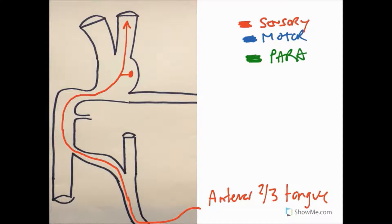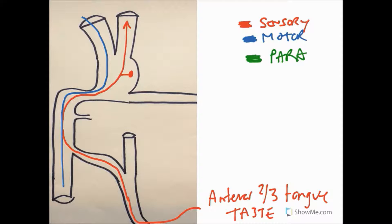Remember that general sensation from the anterior two-thirds of the tongue is trigeminal — here we are dealing with taste, a special sensation. Next, we have our motor branches coming in the other direction through the motor root. They travel down through a foramen called the stylomastoid foramen, and from there we have the five branches of the facial nerve.